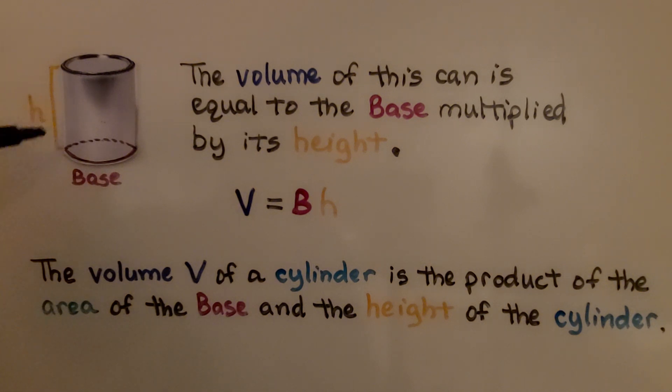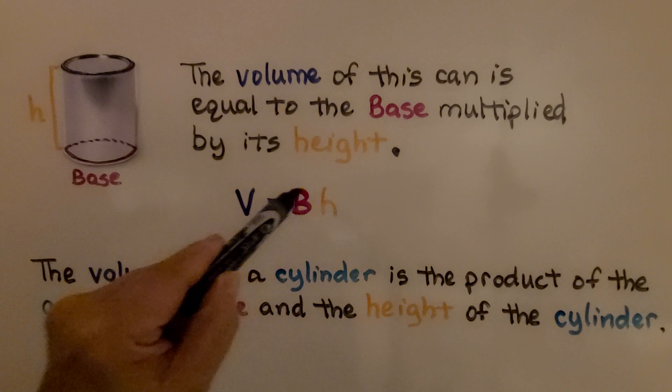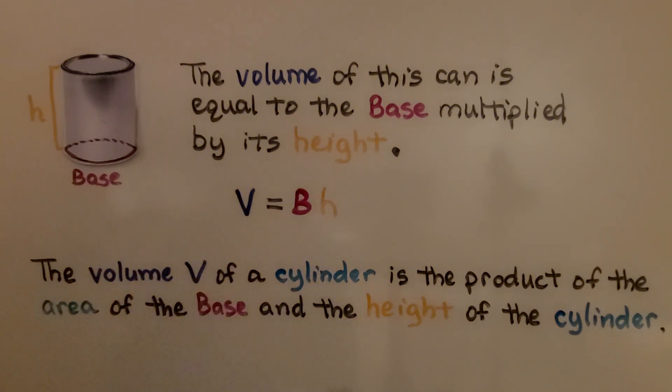Now take a look at this can. The volume of this can is equal to the base area multiplied by its height. It's V equals B times H—volume equals base times height. The volume V of a cylinder is the product of the area of the base and the height of the cylinder.